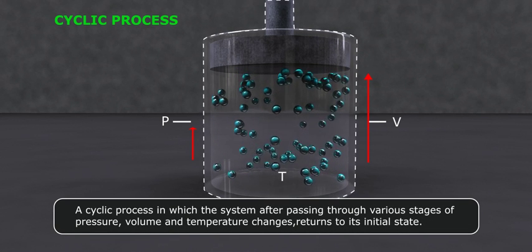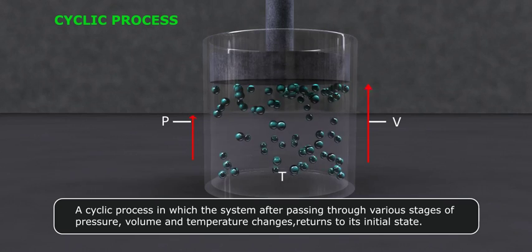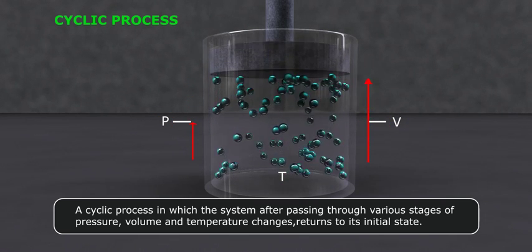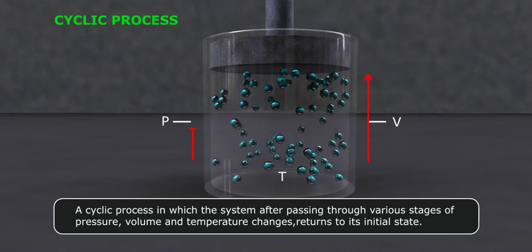A cyclic process in which the system, after passing through various stages of pressure, volume, and temperature, changes and returns to its initial state.